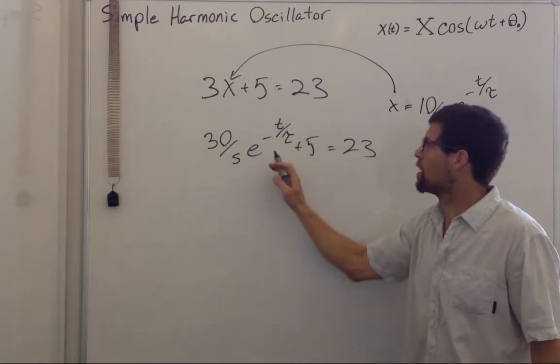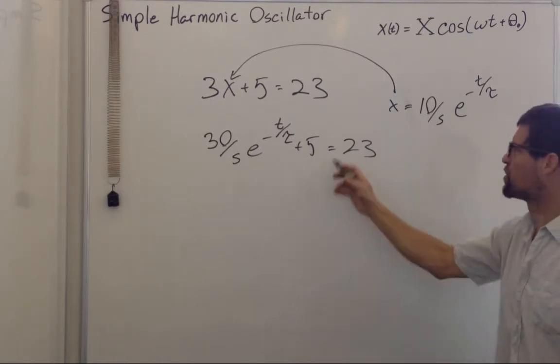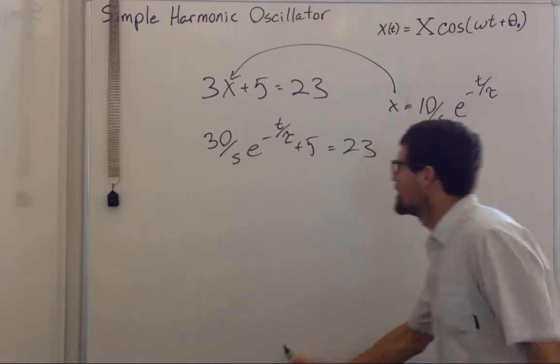What if t is 0? This comes out to be 30, 30 plus 5, 35 per second is not equal to 23. The units are wrong, everything is wrong. So this can't be true.